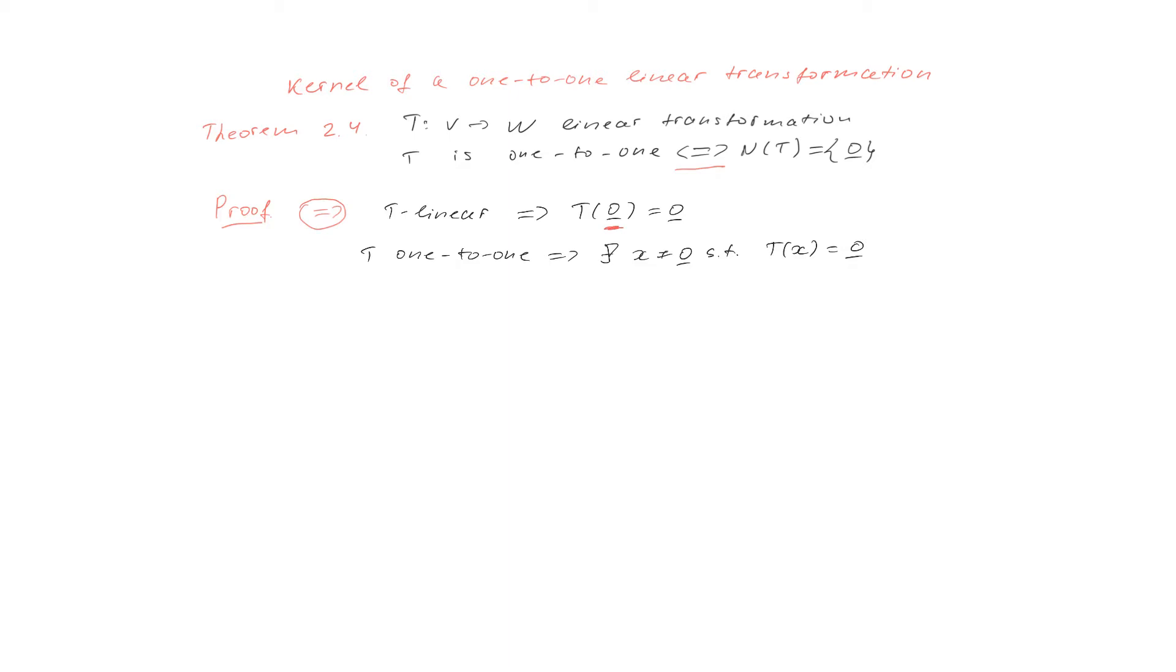Because from the fact that T is one-to-one, it follows that all vectors are transformed into different vectors and if zero vector transformed to zero vector, then no other vector can be transformed also to zero vector.